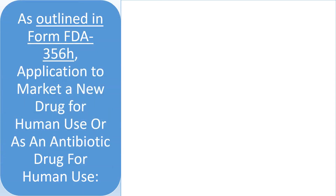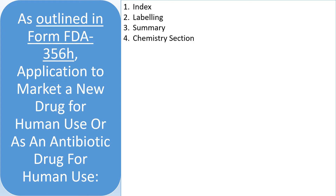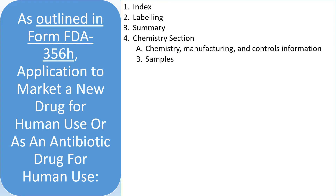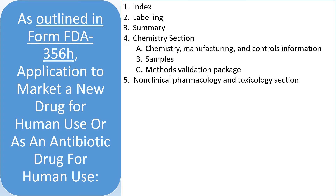As outlined in Form FDA 356H, Application to Market a New Drug for Human Use or as an Antibiotic Drug for Human Use, the application includes: 1. Index; 2. Labeling; 3. Summary; 4. Chemistry Section — A. Chemistry, Manufacturing and Controls Information; B. Samples; C. Method Validation Package; 5. Non-Clinical Pharmacology and Toxicology Section.